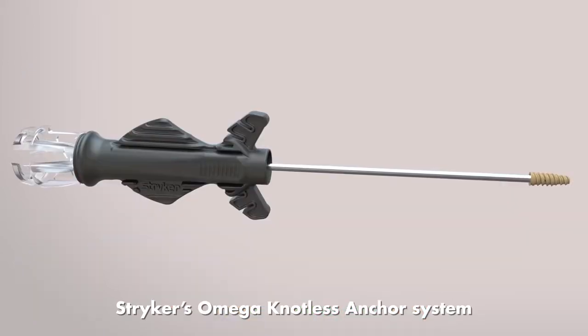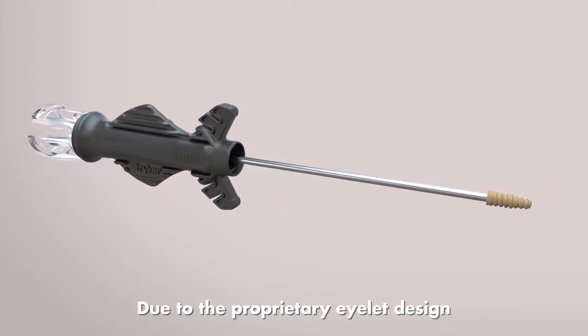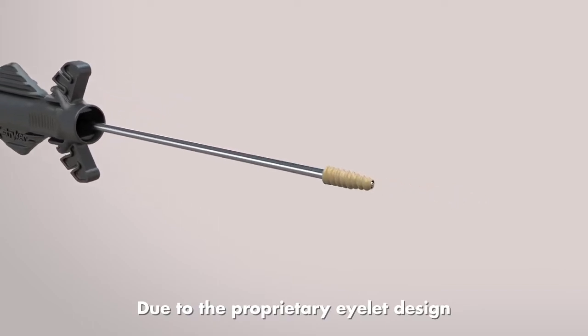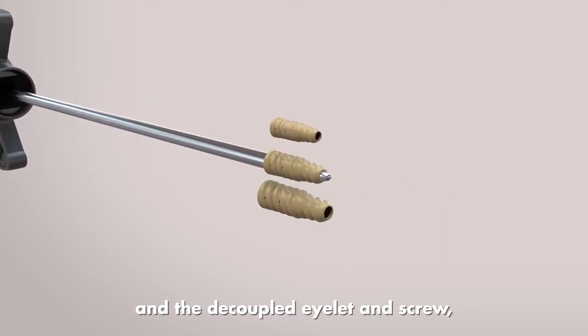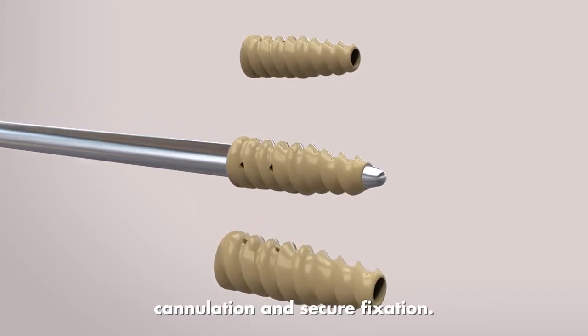Stryker's Omega Knotless Anchor System features an all-peak self-punching eyelet with screw and fixation. Due to the proprietary eyelet design and the decoupled eyelet and screw, Omega is designed to offer unobstructed cannulation and secure fixation.